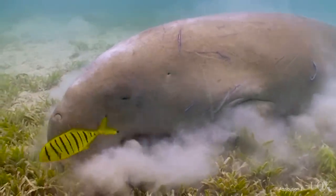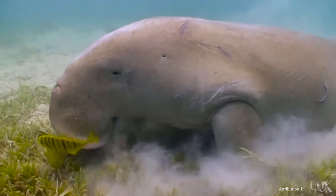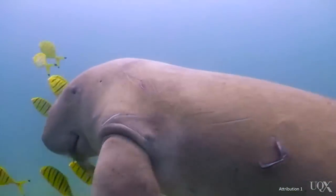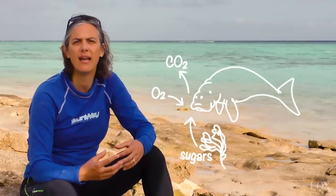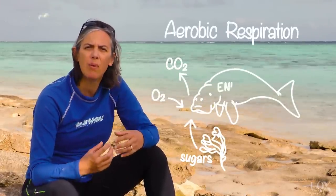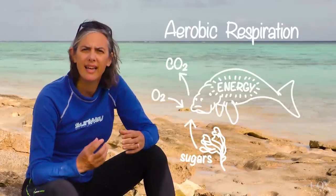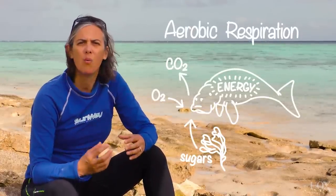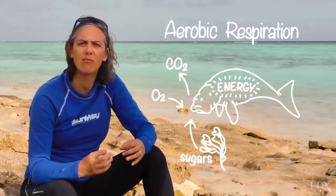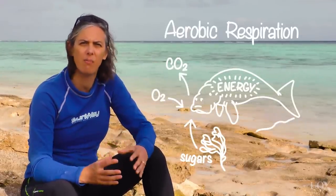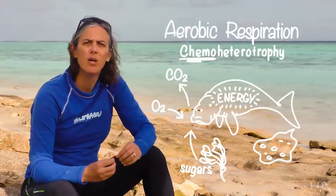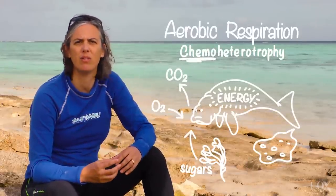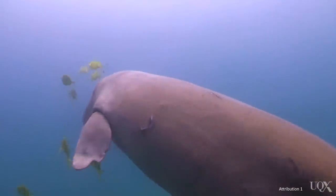Animals such as the dugong, as seen here, build biomass directly from the organic carbon that they ingest in the form of marine plants. When the dugong eats the seagrass, the carbohydrates are oxidized to carbon dioxide in a process referred to as aerobic respiration, releasing chemical bond energy. Oxygen is used as the electron acceptor, which is reduced to water. When the chemical bonds of the carbohydrates are broken, energy is released, which can then be used for a range of metabolic processes. This mode of life is known as chemo-heterotrophy — chemo because the energy gained results from the breaking of chemical bonds, and hetero because organic carbon is used to build biomass.